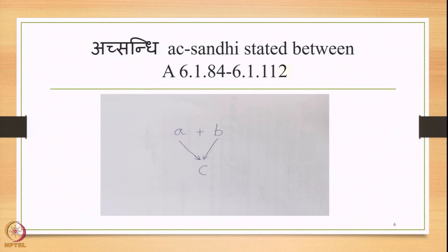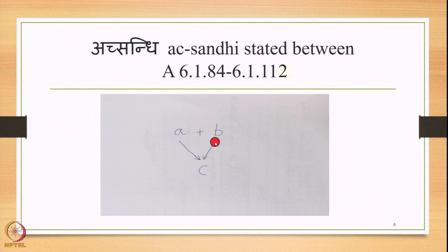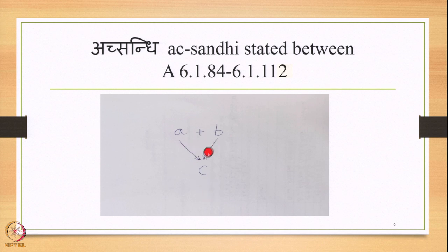Diagrammatically, you have A plus B in Samhita mode — in close proximity — meaning A comes immediately before B and B comes immediately after A. Rules in section 6.1.84 onwards up to 6.1.112 apply, and the substitute that comes in place of both substituents is C. So A plus B is the input and C is the output. C is the Adesh, and A and B are the Sthanis.